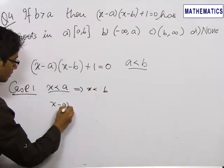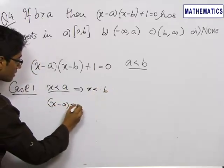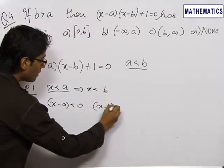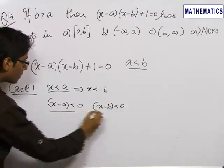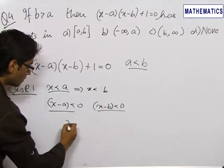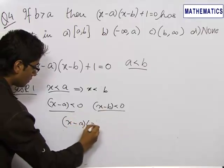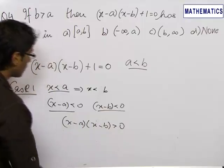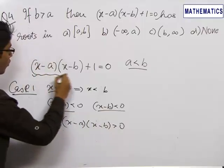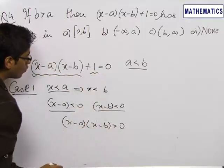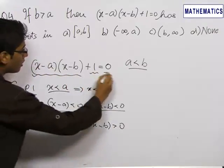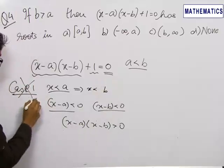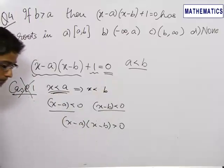So, x minus a would be less than 0 and x minus b would also be less than 0, and hence their product would be greater than 0. A positive quantity added to 1 cannot lead to 0. So, this case is definitely rejected — x cannot be less than a.